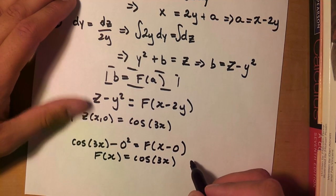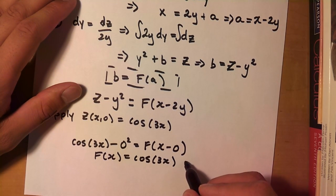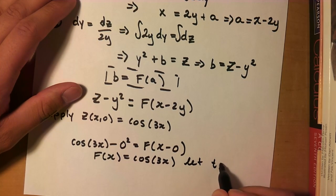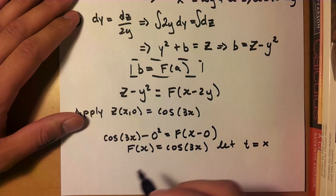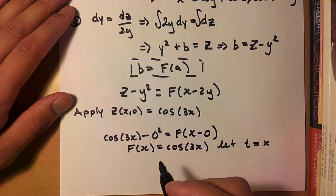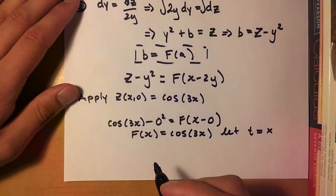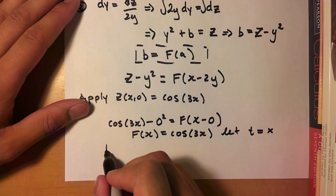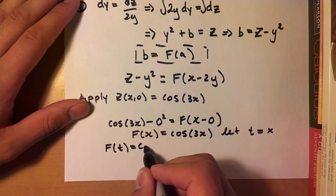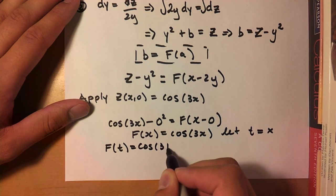Alright, so what we're going to do here is let t equal x. You'll see why I'm doing this in a second. It just makes it easier to conceptualize, I think. Alright, so f of t is equal to cos of 3t.